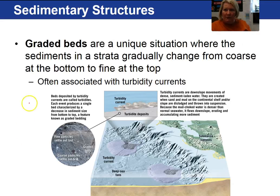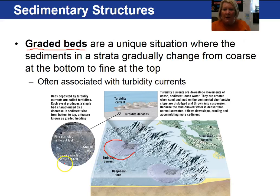Another sedimentary structure is graded beds. These are primarily found in the deep ocean as a result of a turbidity current flowing down a canyon and depositing out the heaviest material first and then finer material on top. So we grade from coarse to fine as you progress upward in a graded bed.